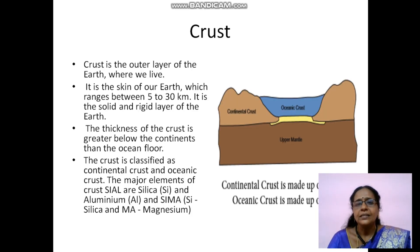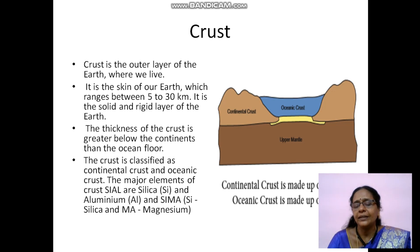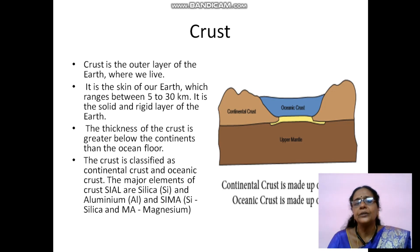Next topic: the crust. The crust is the outer layer of the earth where we live. It is also considered as the skin of the earth - which layer is called the skin of the earth? The crust. It ranges between 5 to 30 kilometers and is the solid and rigid layer of the earth.